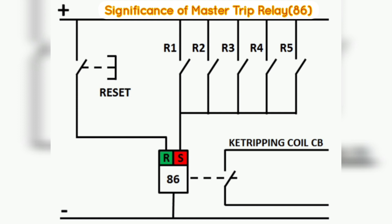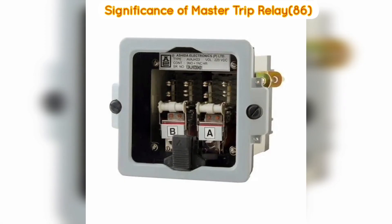Fourth, a Master Trip Relay is a high-speed auxiliary tripping relay and it immediately issues a trip command to the circuit breaker's trip coil. The operating time of the relay is 10 milliseconds nominal at rated voltage. We cannot directly wire the protection relays with a circuit breaker's trip coil, as that does not have an anti-pumping circuit. The anti-pumping circuit interrupts the tripping command once the breaker gets tripped. The Master Trip Relay releases a single pulse for tripping, and thus no anti-pumping circuit is required in the circuit breaker.